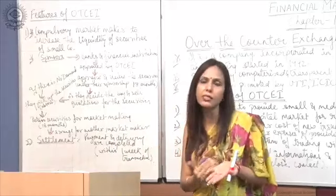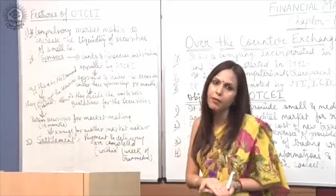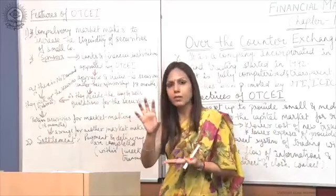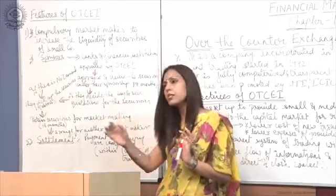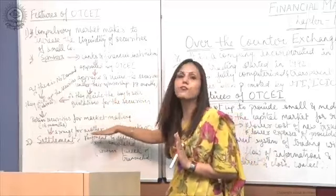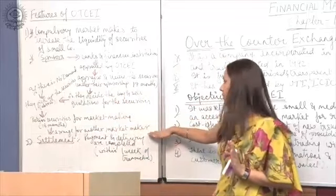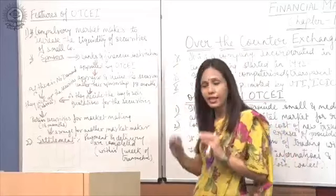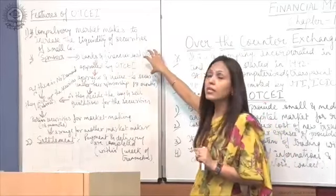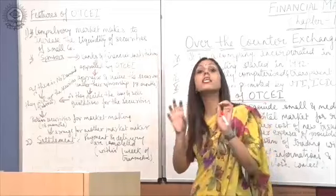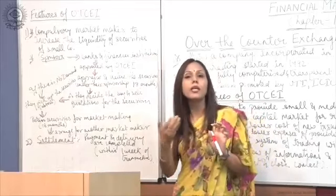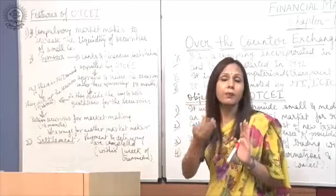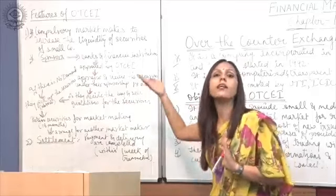If there is no demand for the securities, these market makers absorb and retain the securities for market-making purposes. They retain the securities for 18 months, after which they arrange for another market maker. In this way, OTCI provides liquidity — that is, the ability to convert securities into cash — to investors.